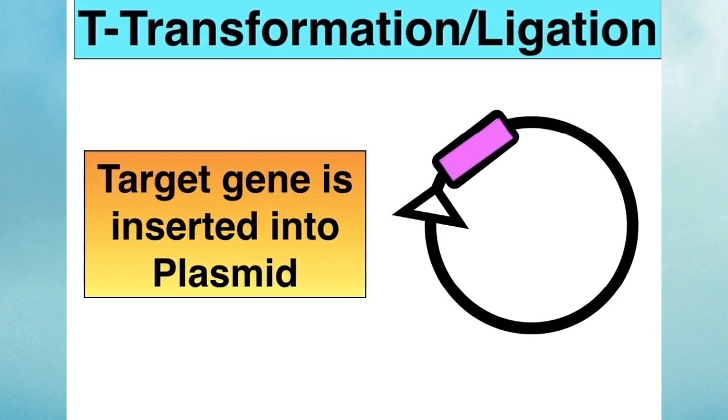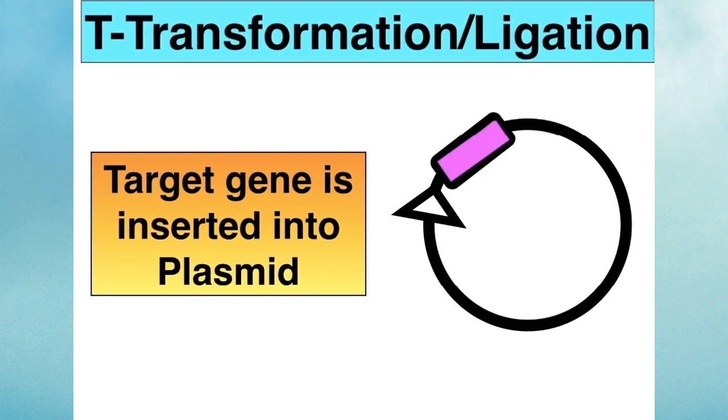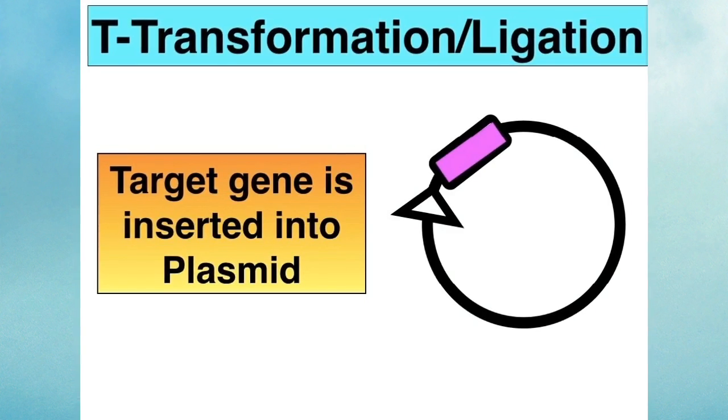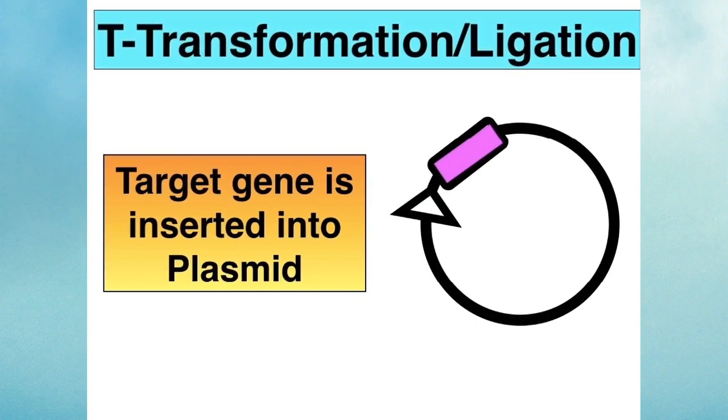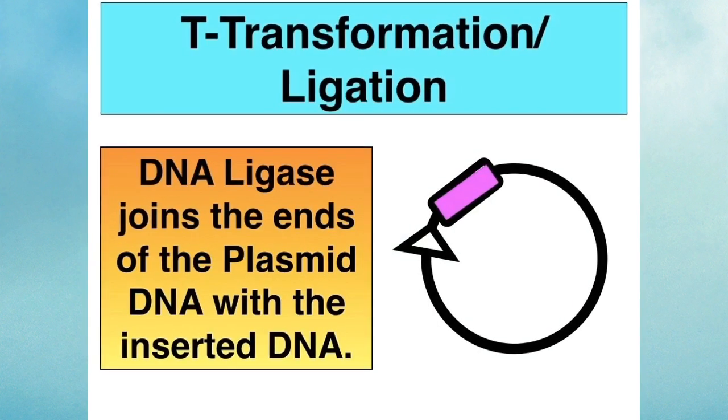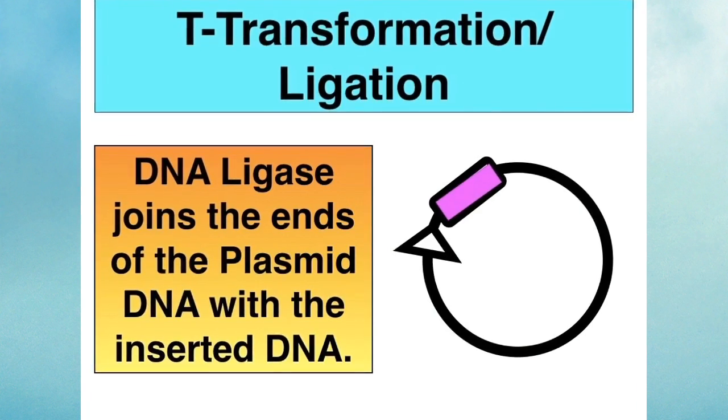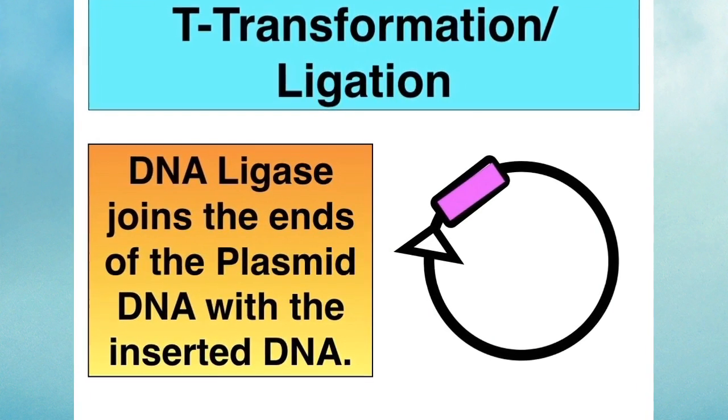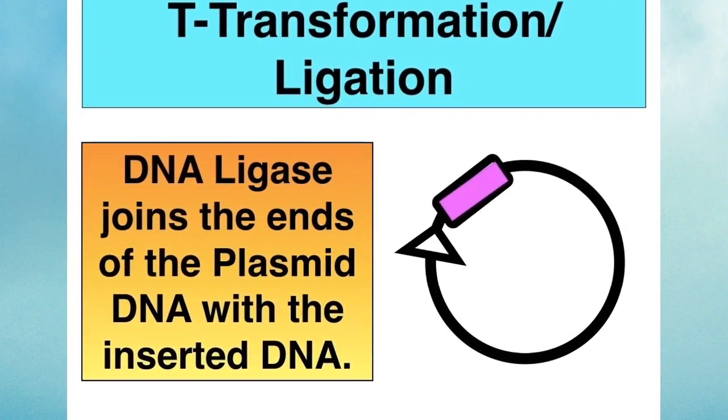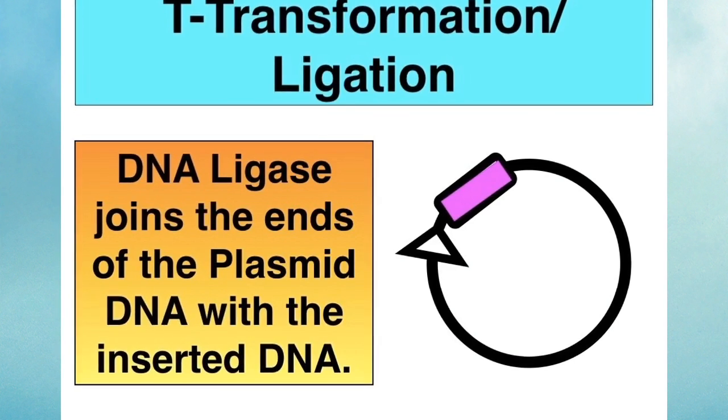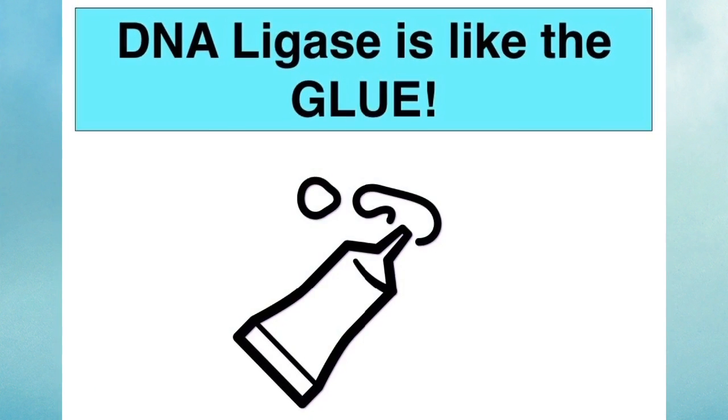So we've done isolation, we've done cutting, now it's on to T, transformation with ligation always attached. The target gene is inserted into the plasmid. DNA ligase is an enzyme, and its job is to reconnect the plasmid. It's going to connect the ends of the newly inserted DNA with the ends of the plasmid.